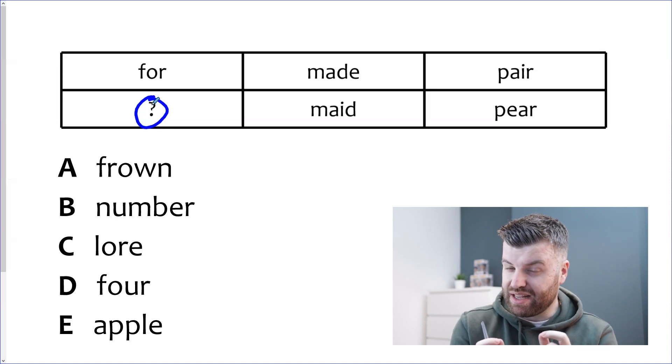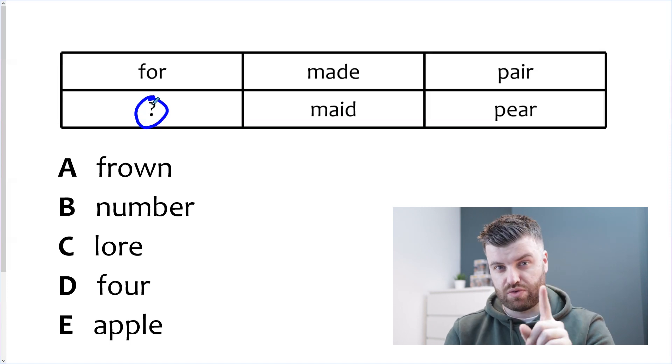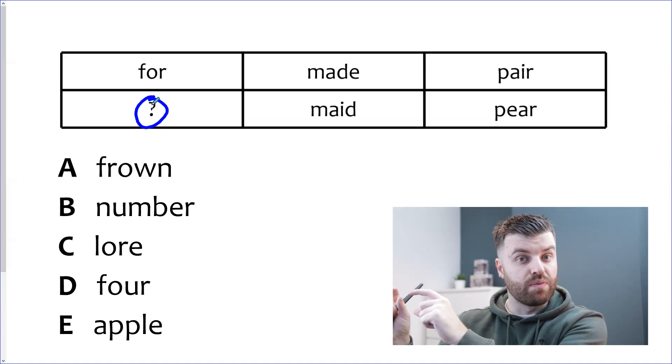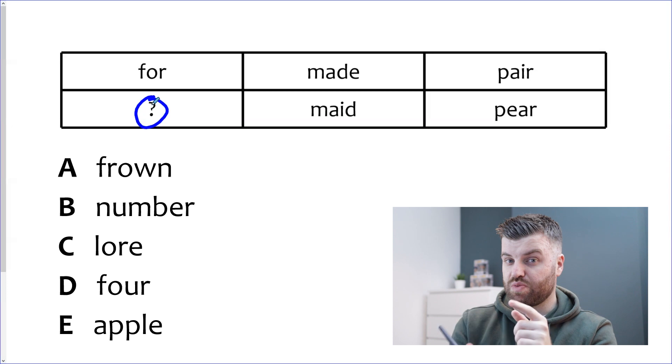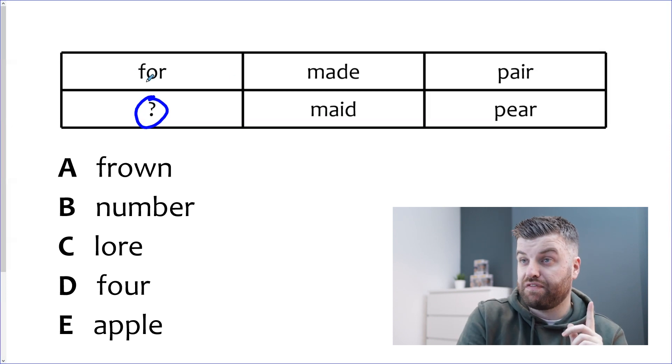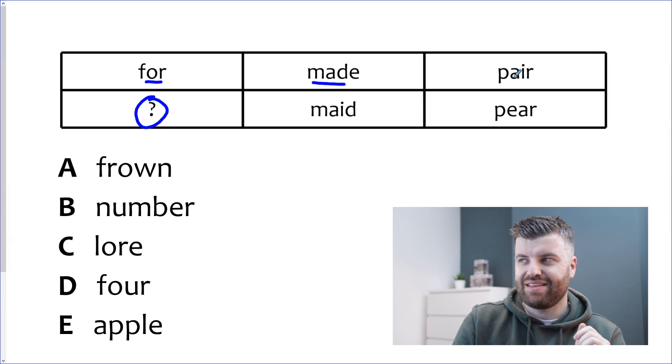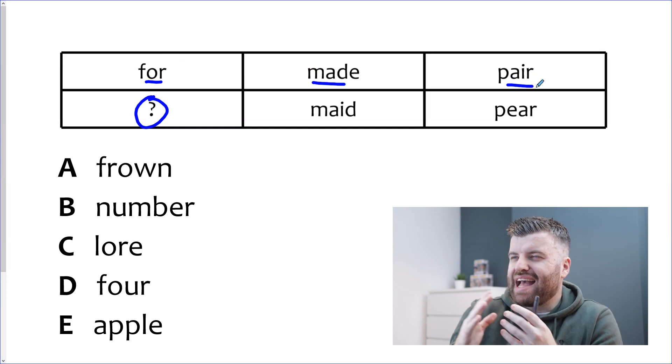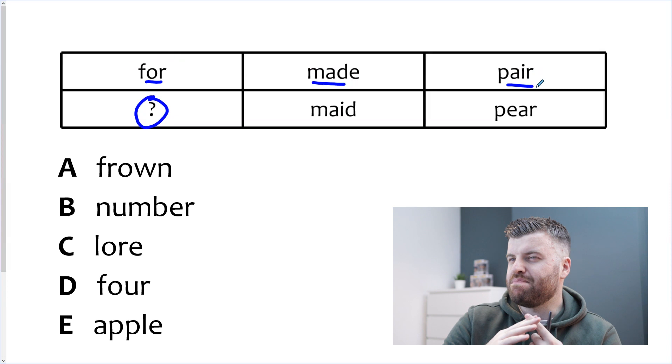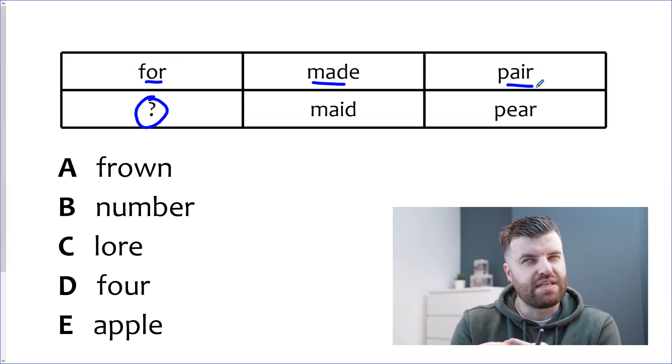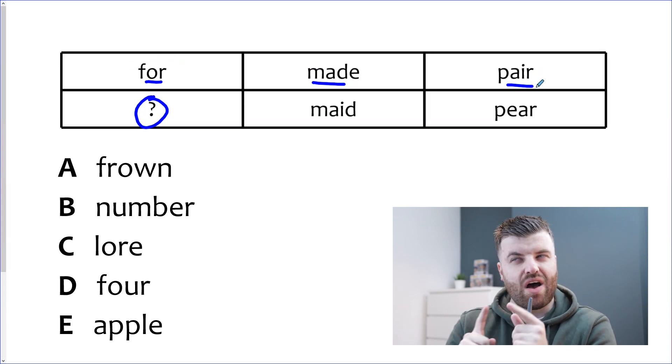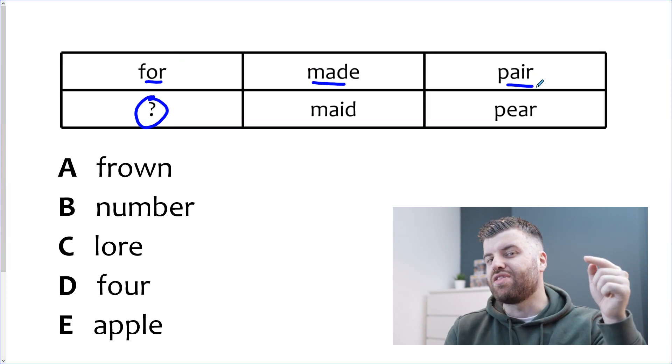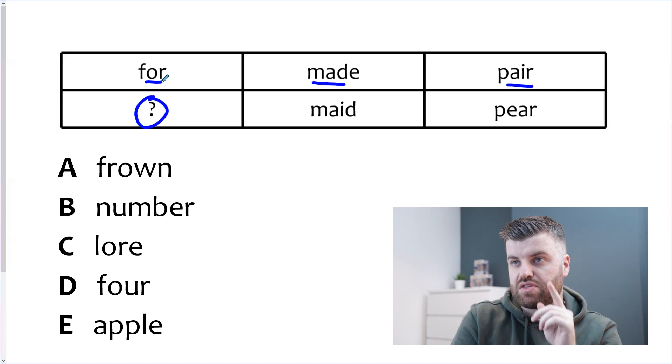Now to find those links we have two ways to do so. The first way is we can try and read the words across in a row and see if there's a link between those words. So let's take a look at that first. We have for, made and pair. And I'm trying to think now outside of the box is there anything that links these words? Are there meanings that are the same? Do they go together to make something? And I can't think of any links at all. So I failed to find the link using the row method.